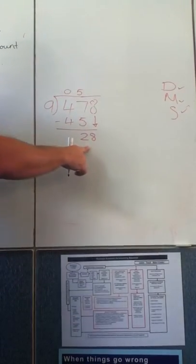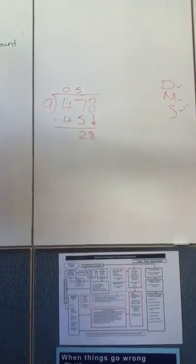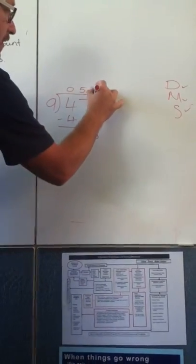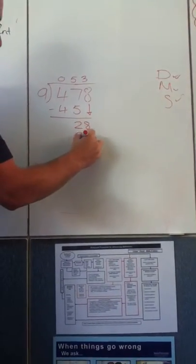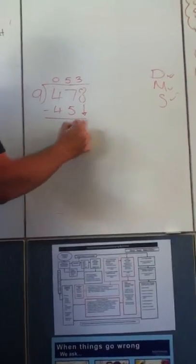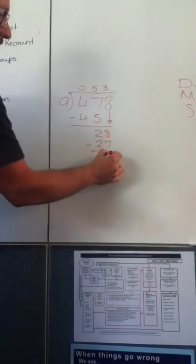How many 9s in 28? 3. Now we do the multiply. 3 times 9 is 27. We do the subtract. 28 take away 27 is 1.